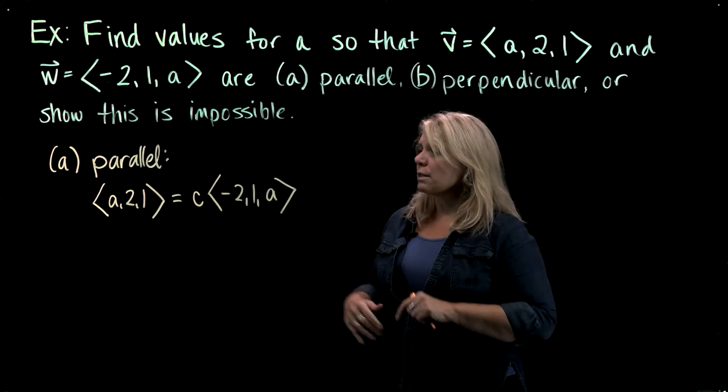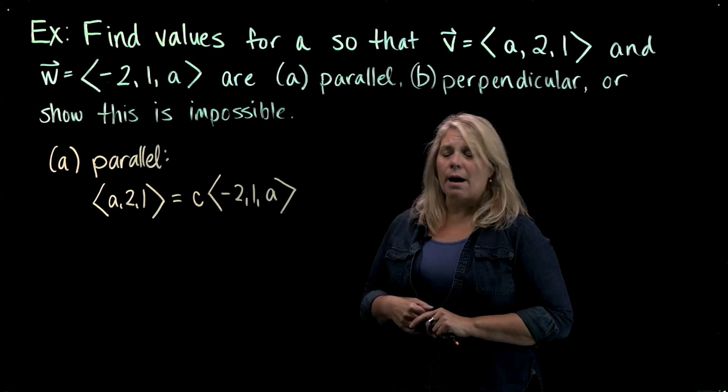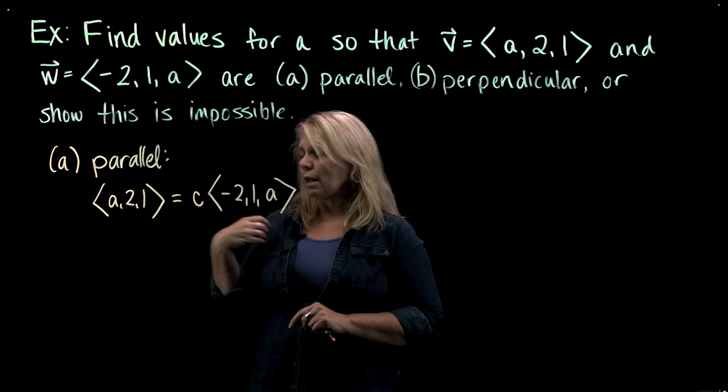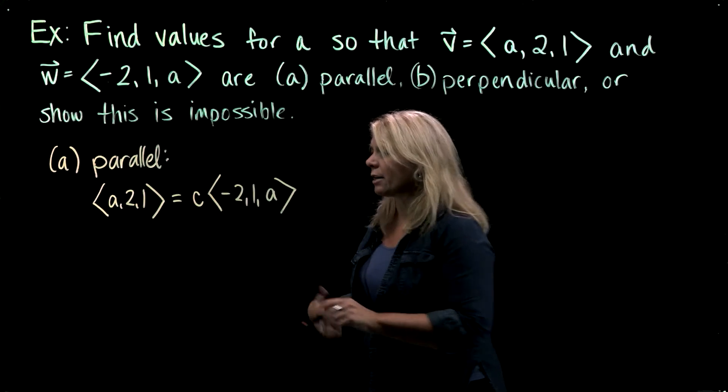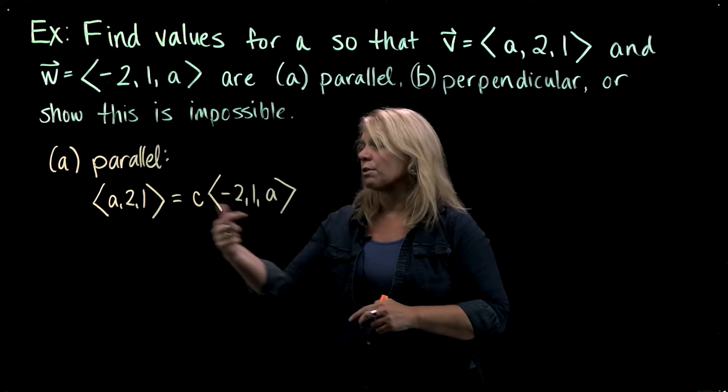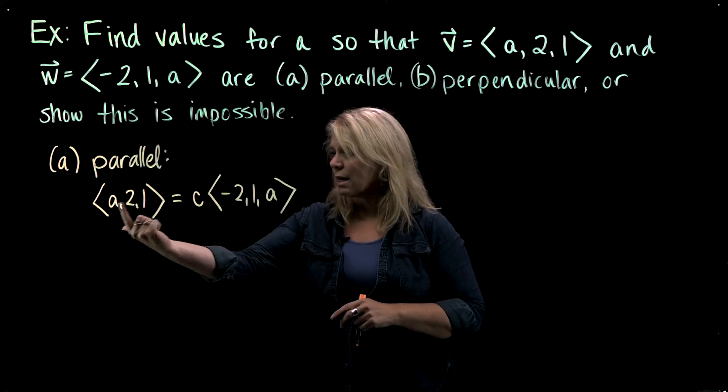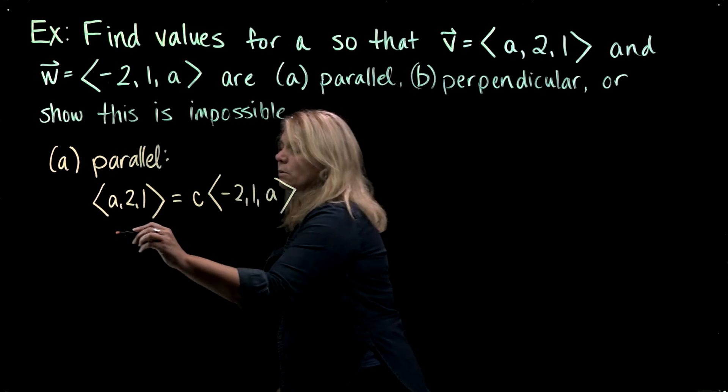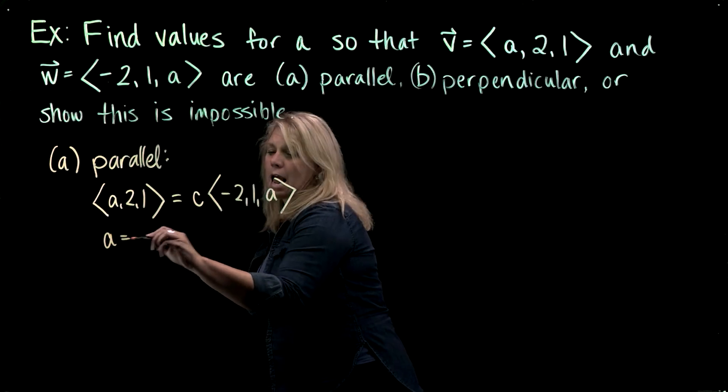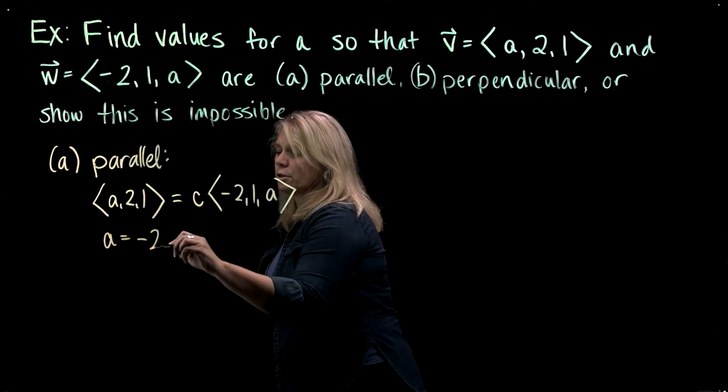And so in order to simplify that, maybe we want to think about in terms of the individual components. So in the first component of each vector here, if this equation is true, then my first components, here and here, are going to have to be equal to each other. So I would have A equals negative 2C.